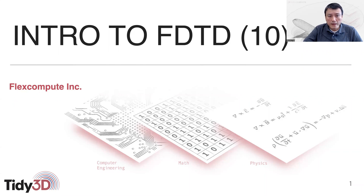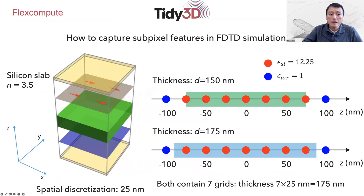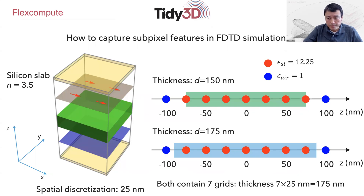Today we'll continue our tutorial on the finite difference time domain method, the FDTD method. In particular, we will be talking about this idea of subpixel averaging.